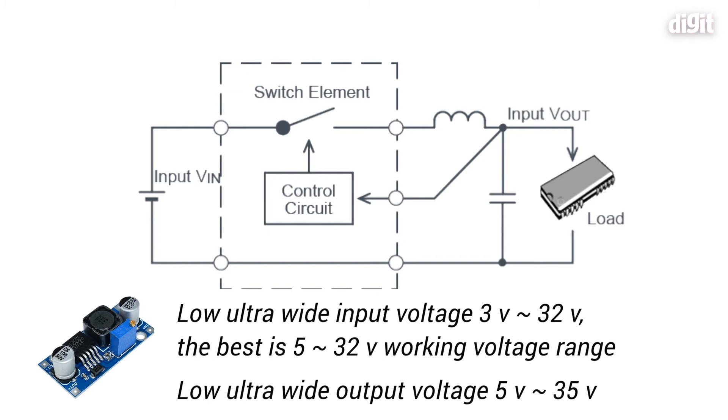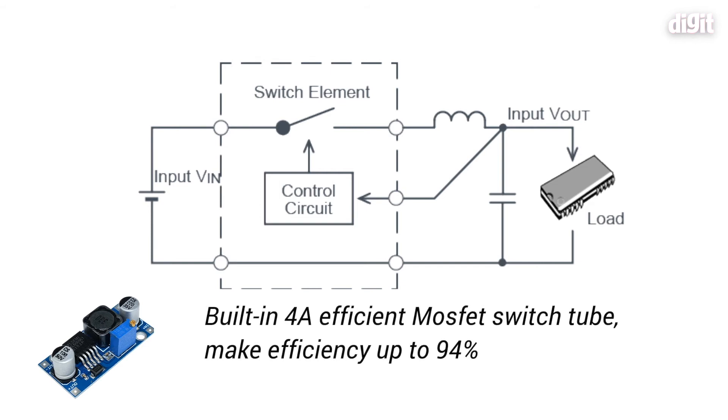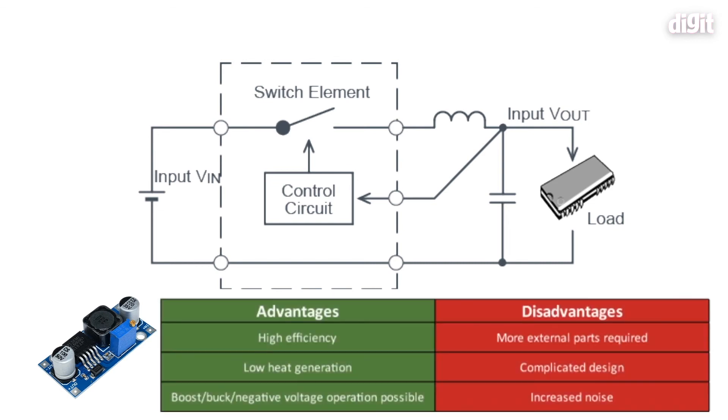There are external filter capacitors to smooth it out, so the entire circuit switches on and off at a really high frequency to provide the output. In the case of the XL6009, the efficiency rating for the IC is 94%, and because it's switching on and off, you're not functioning all the time, which means overall heat generation is much lower. This can be converted to operate in a buck configuration, boost configuration, or negative voltage operation.